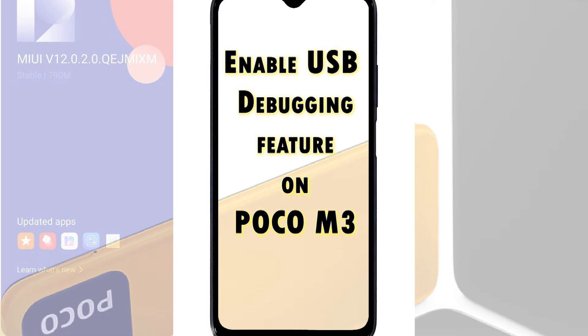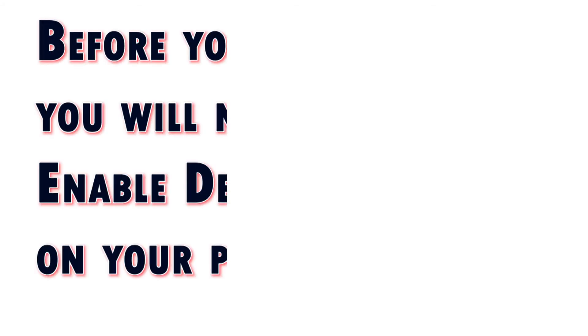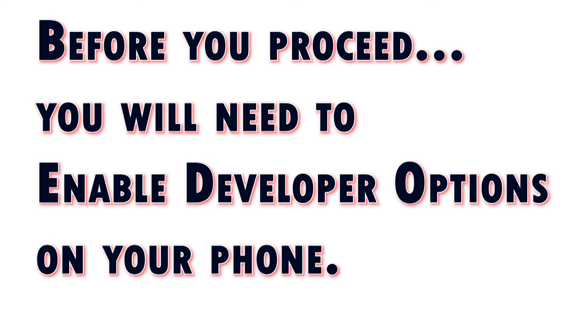And here's how it's done on the POCO M3 smartphone. In order to access and activate the USB debugging switch you must have enabled developer options on your phone beforehand. If you haven't already, then that should be the first thing you do.